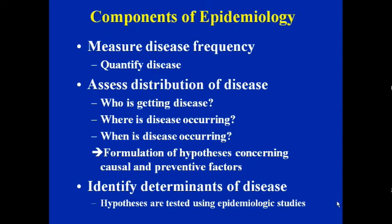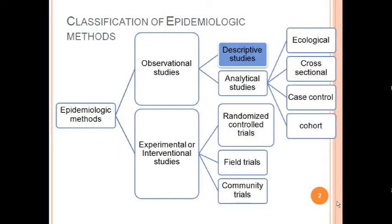The third component is to determine and identify the determinants of the disease, by which we test the hypothesis. Epidemiological studies are broadly classified into two types: observational studies, where we allow nature to take its own course, and experimental or interventional studies, where one directly intervenes. Observational studies are further divided into descriptive studies and analytical studies.